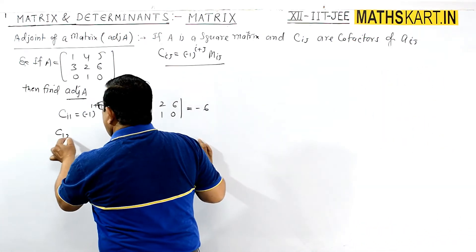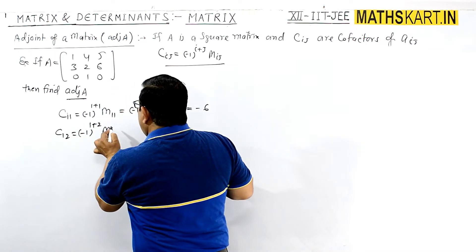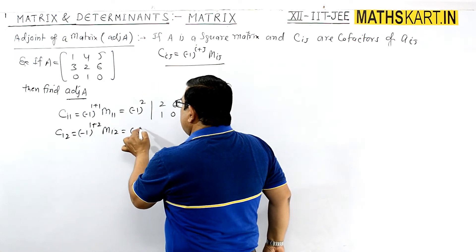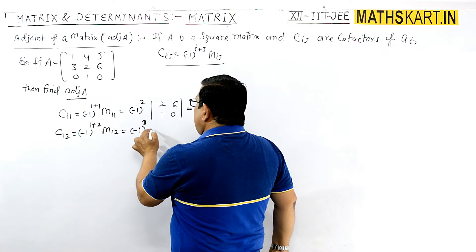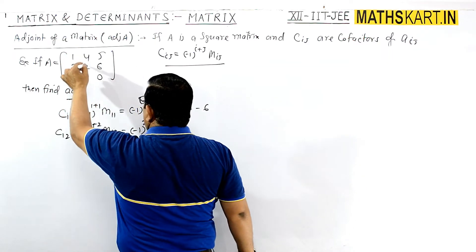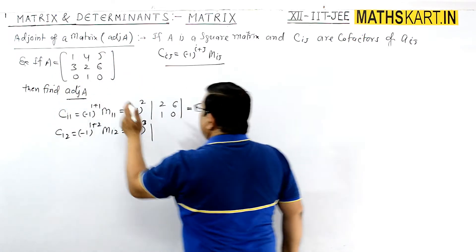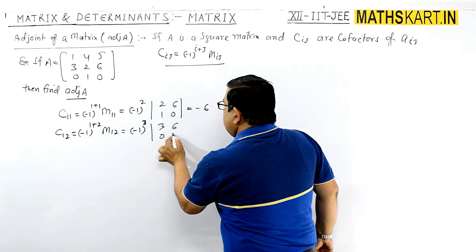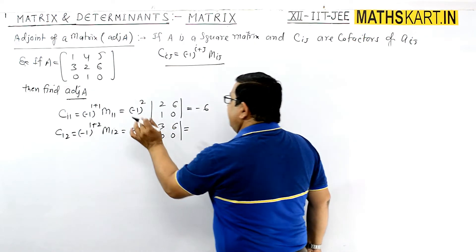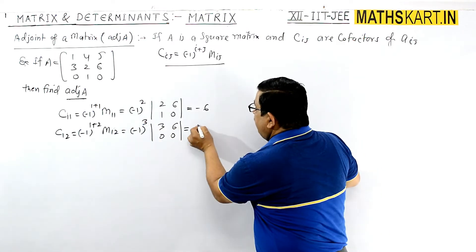Similarly, C_12 = (-1)^(1+2) × M_12 = (-1)^3 × M_12, which is negative. For M_12, remove the corresponding row and column, leaving |3,6; 0,0| = 0 − 0 = 0. So (-1)^3 × 0 = 0. Therefore C_12 = 0.